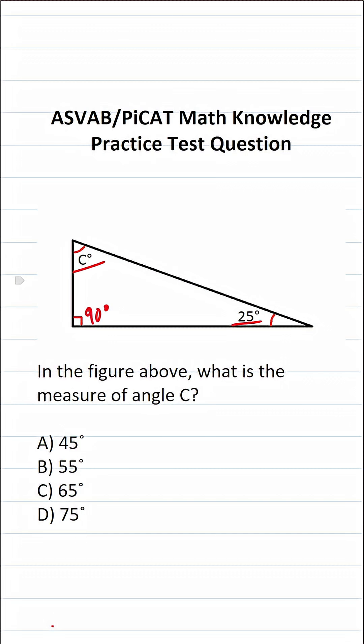In order to answer a question like this, you have to know the triangle sum theorem. It sounds complicated, but it's really simple. The triangle sum theorem says all three angles in a triangle add up to 180 degrees.